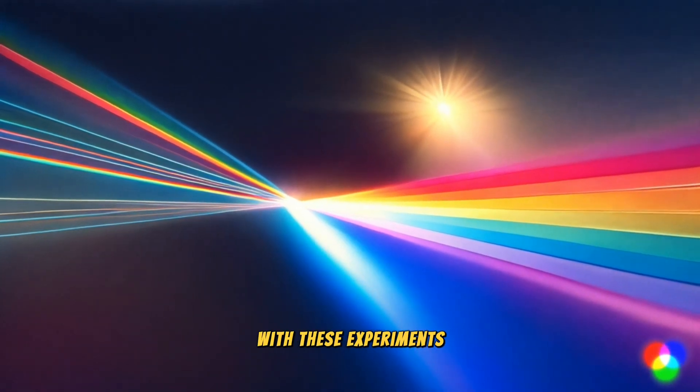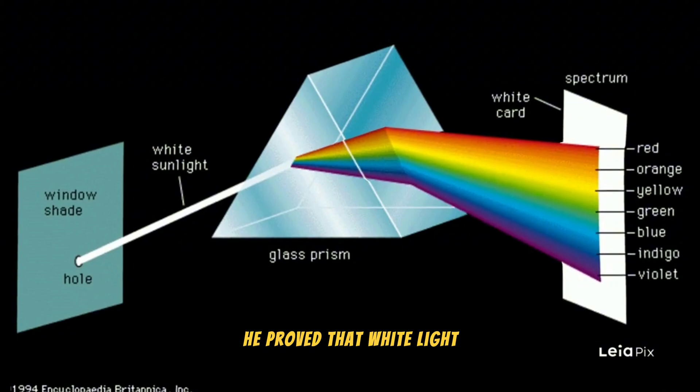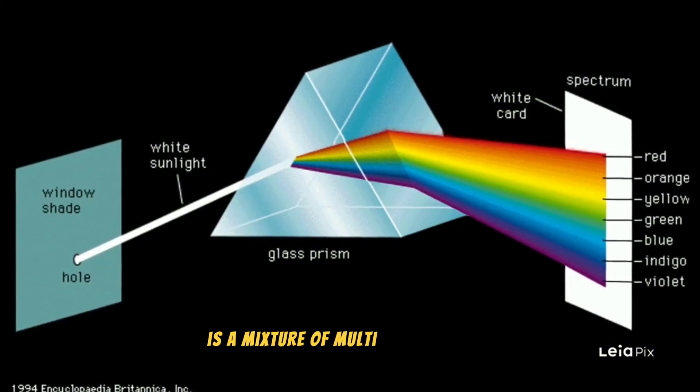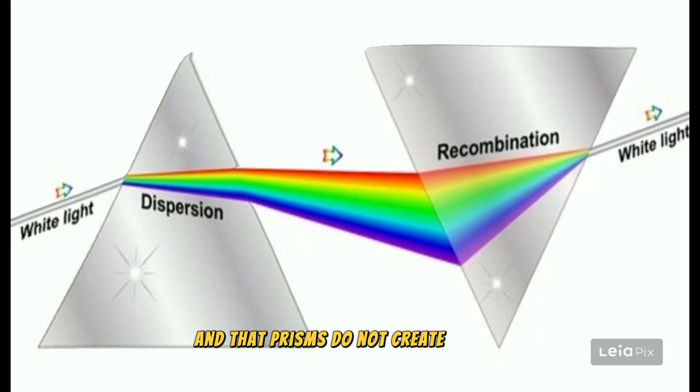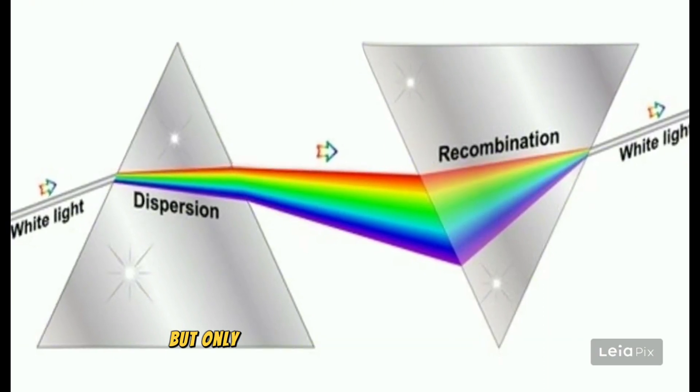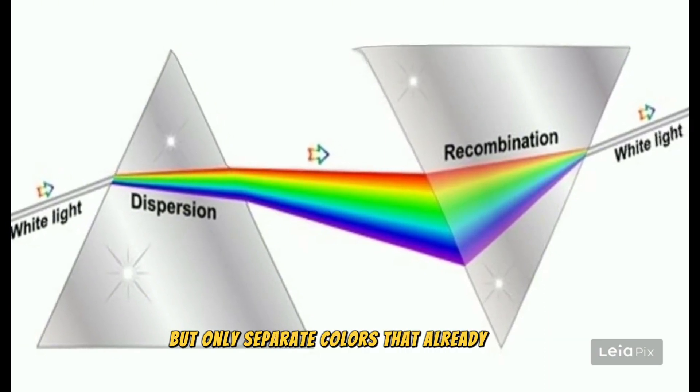With these experiments, he proved that white light is a mixture of multicolored light, and that prisms do not create colors, but only separate colors that already exist.